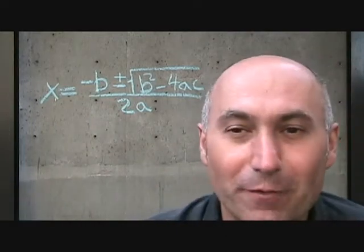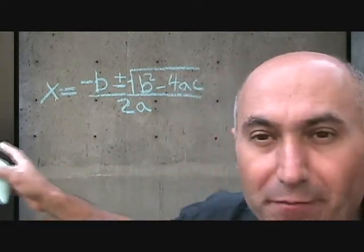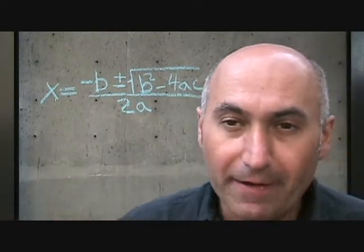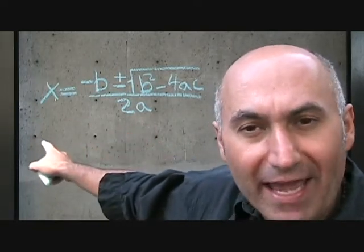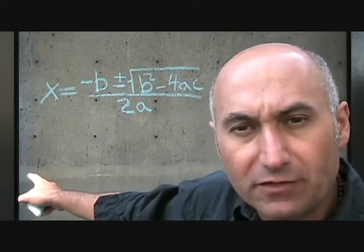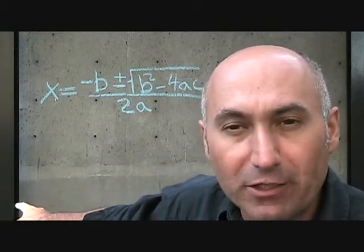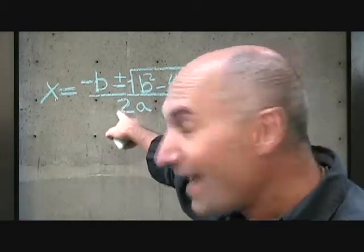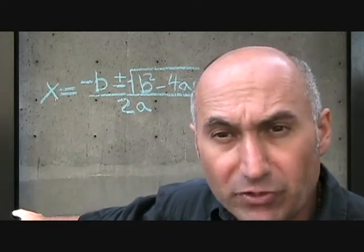Here is the formula: x equals negative b plus or minus the square root of b squared minus 4ac, over 2a. All those letters — a, b, and c — are your coefficients and your constant from the quadratic equation, or quadratic expression, or quadratic function. The x represents your x-intercepts — your roots.